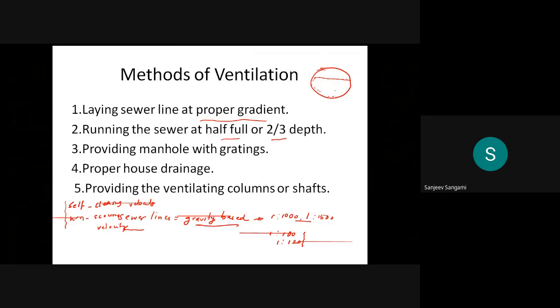Then provide manholes with gratings. Sometimes we'll discuss what is a manhole, the purpose of manholes, how exactly they're made, and the importance of gratings in the next slides. Then proper house drainage should be there because if proper house drainage is there, there's no blockage. Finally, provide ventilating columns or shafts in the method of ventilation.